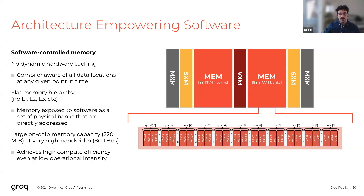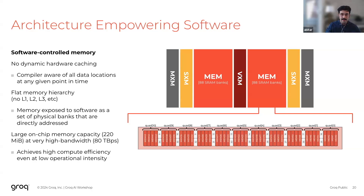Not only does this memory architecture empower our software, it also offers very large amounts of on-chip memory capacity — 220 megabytes in our first-generation LPU — and crucially at very high bandwidth, up to 80 terabytes per second. This high bandwidth is crucial to allow the architecture to efficiently use the compute units on the chip even for workloads at very low operational intensity. For example, large language models happen to possess this characteristic — they're largely memory bound — and so a high memory bandwidth architecture is crucial for saturating the available compute on the chip.